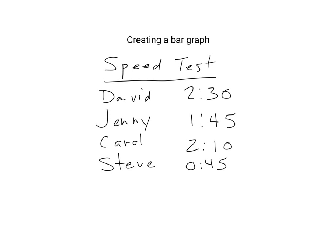In this video I'm going to very quickly show you how to create a very simple bar graph. We have our table here which is where we are going to get our information for our bars. In this speed test, these children had to bounce a ball 50 times.